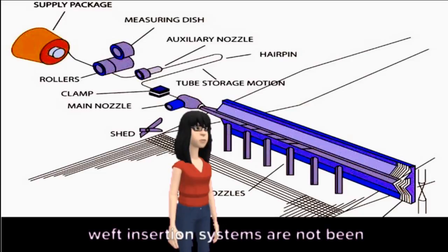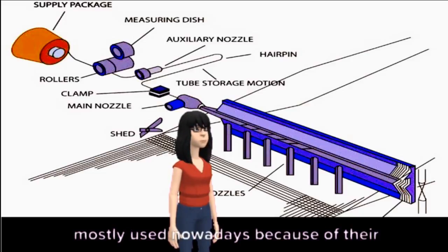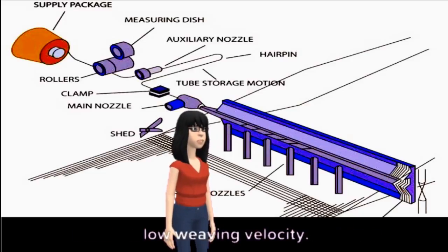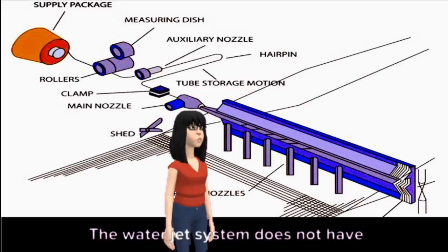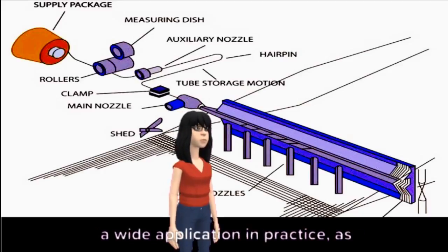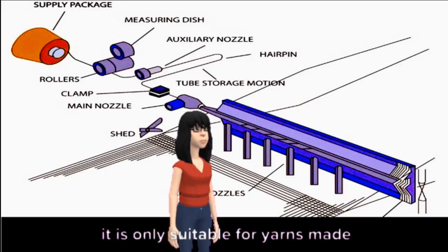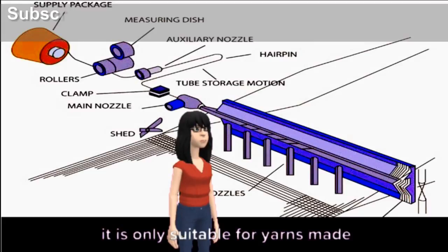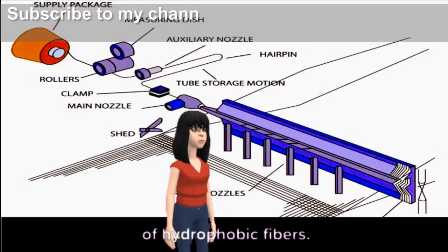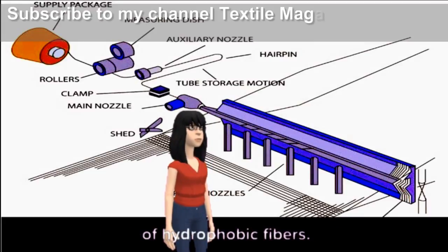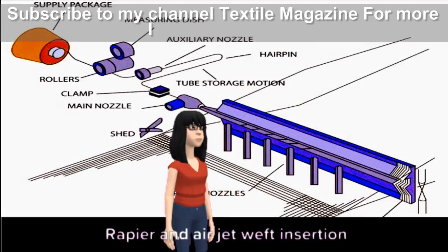Of these groups, shuttle and projectile weft insertion systems are not mostly used nowadays because of their low weaving velocity. The water jet system does not have a wide application in practice, as it is only suitable for yarns made of hydrophobic fibers.